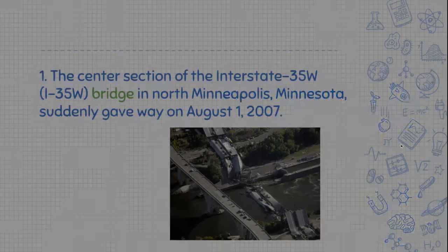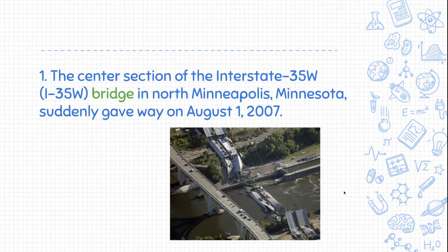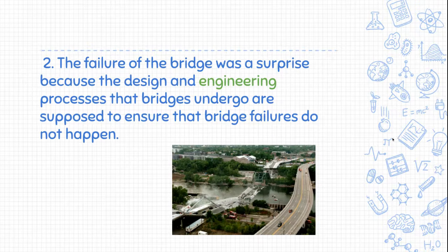The Minneapolis Bridge Failure happened on August 1st, 2007, when the center section of the Interstate 35 West Bridge in North Minneapolis, Minnesota suddenly gave way. As you can see, it kind of buckled here and there — just part of the bridge collapsed.